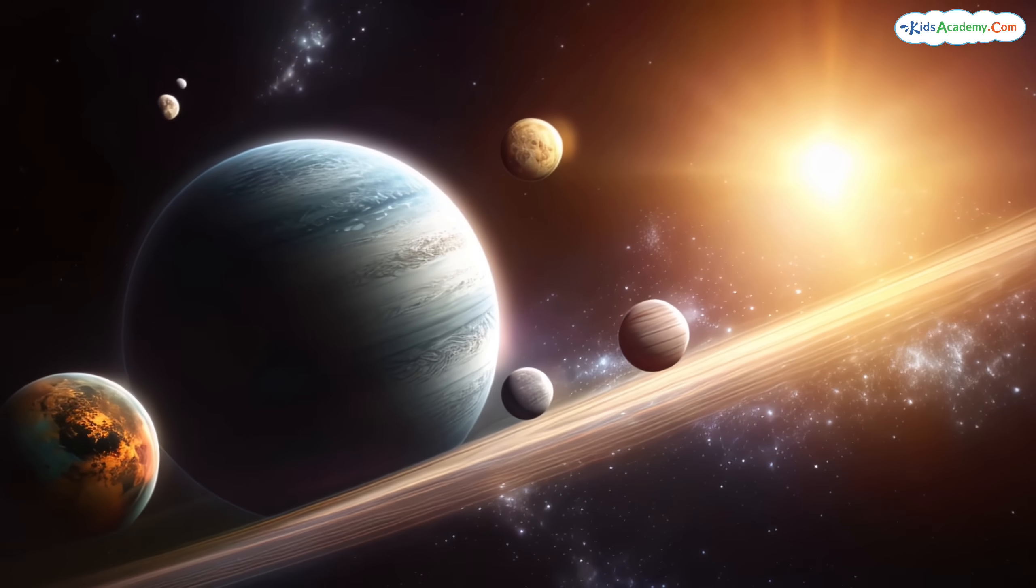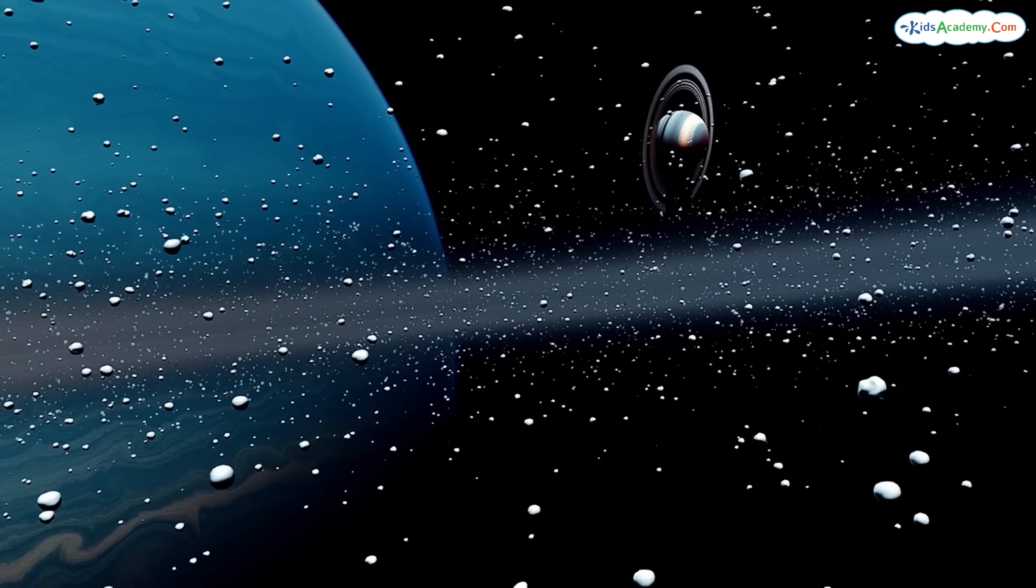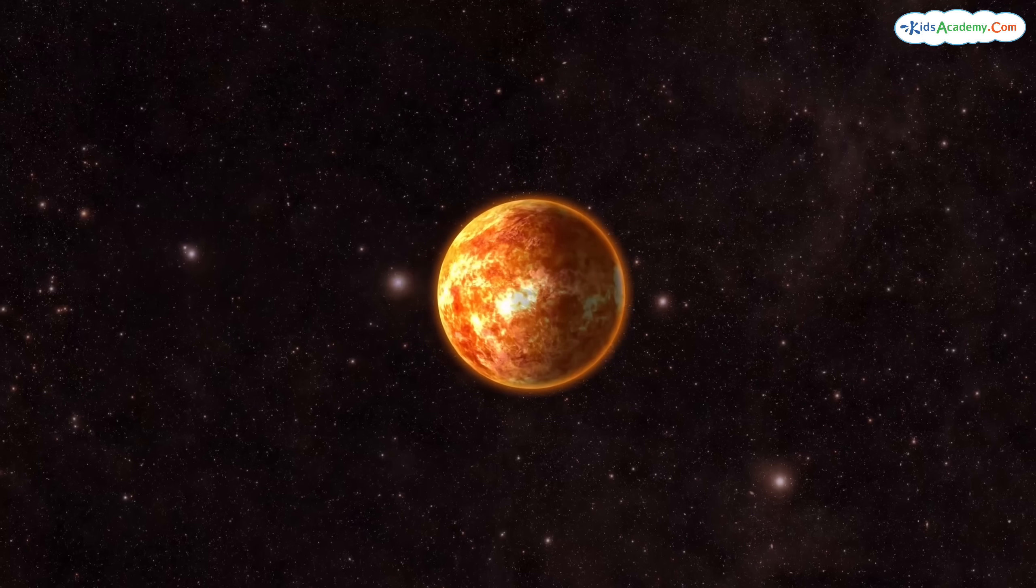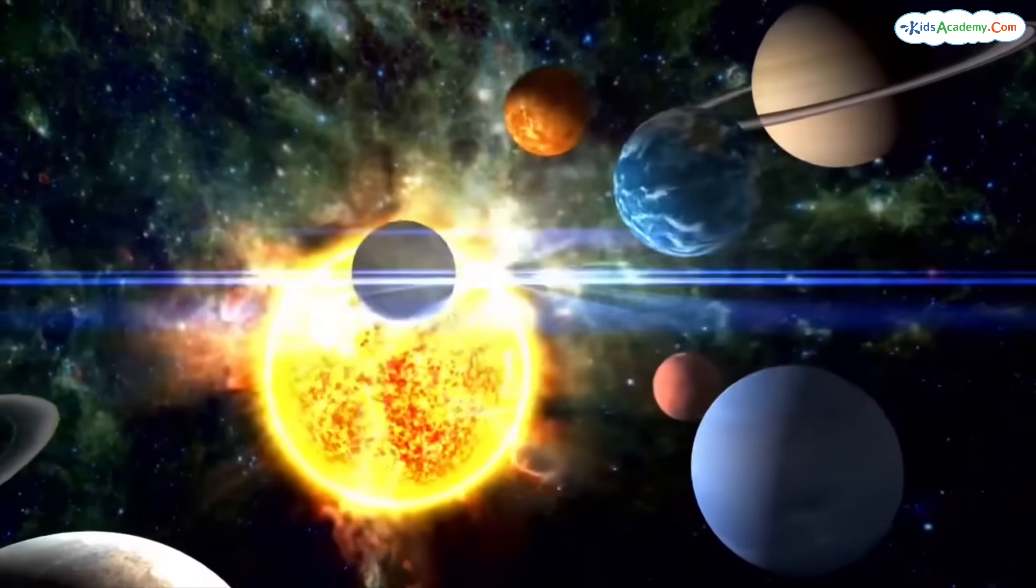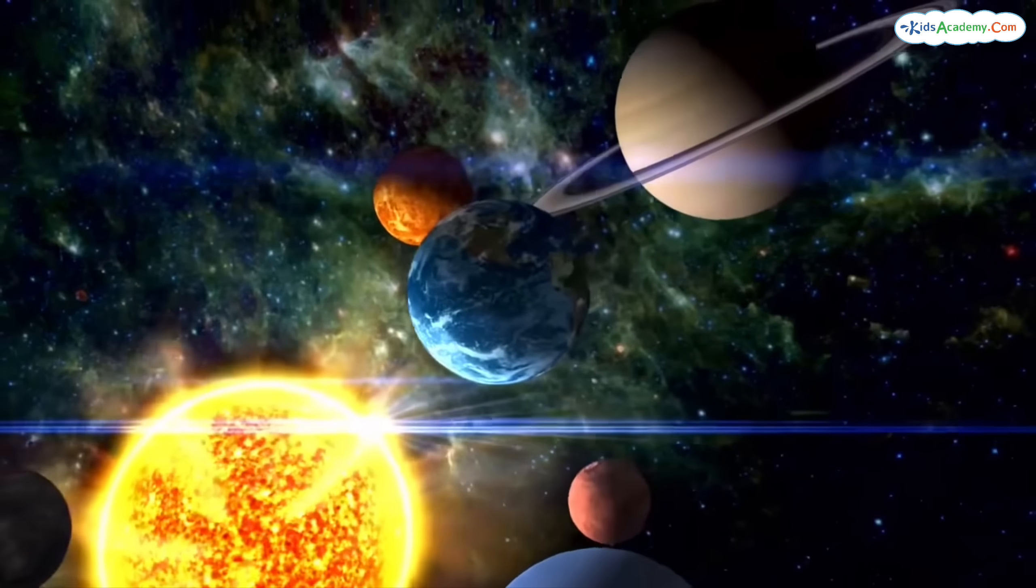Alright, space cadets, let's blast off into the cosmic wonderland of our solar system. Did you know that our solar system is like a super cool family and the sun is the shining star at the center? Surrounding the sun are eight incredible planets, each with its own unique personality and style.